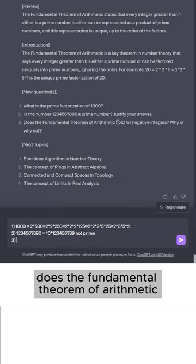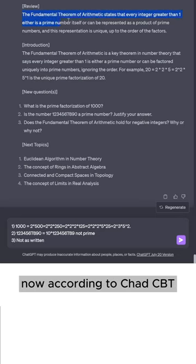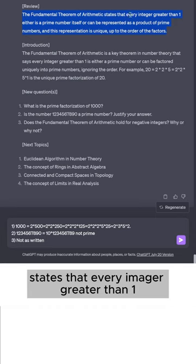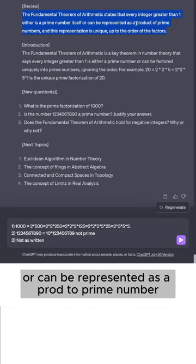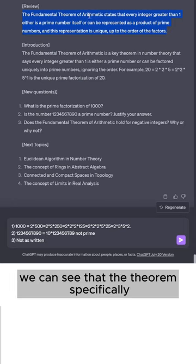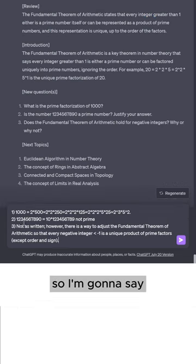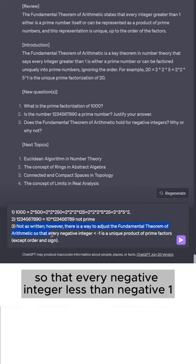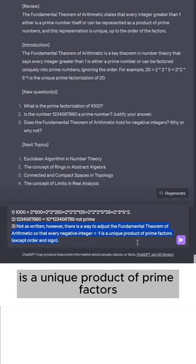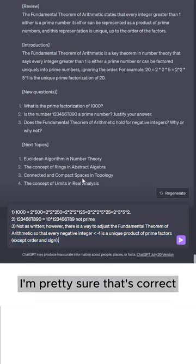Number 3, does the fundamental theorem of arithmetic hold for negative integers. Why or why not? Now, according to ChatGPT, the fundamental theorem of arithmetic states that every integer greater than 1 either is a prime number itself or can be represented as a product of prime numbers. So from this, we can see that the theorem specifically applies to integers greater than 1. So I'm going to say not as written. However, there is a way to adjust the fundamental theorem of arithmetic so that every negative integer less than negative 1 is a unique product of prime factors with exception to order and sign. I'm pretty sure that's correct.